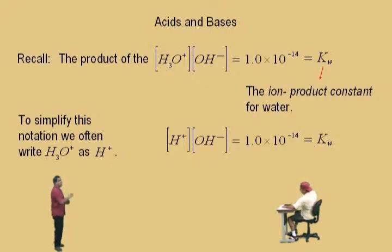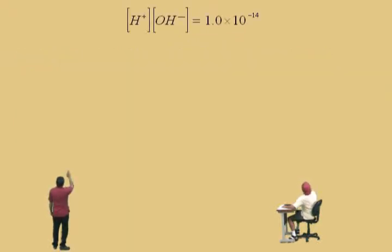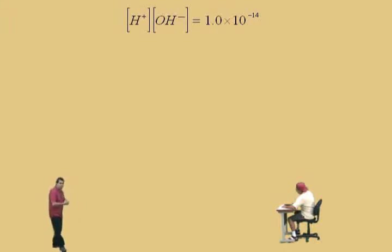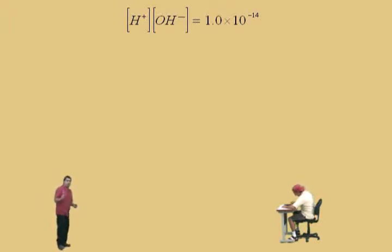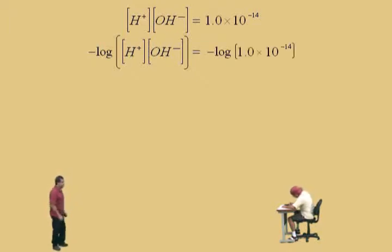You can talk more about that notation with your chemistry instructor. We're going to do the math. The product of the hydrogen and hydroxide ion concentrations will always equal 1.0 times 10⁻¹⁴. With this, we can get a relationship with something called pH and pOH — we're going to talk about the p-scale. What we're going to do with our equation is take the negative log of both sides: negative log of the left-hand side equals the negative log of 1.0 times 10⁻¹⁴.